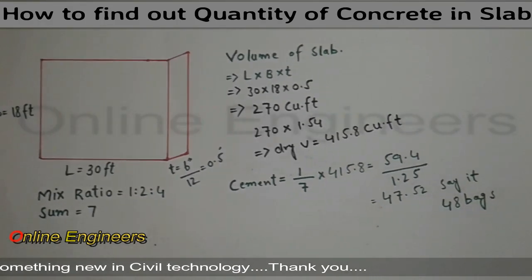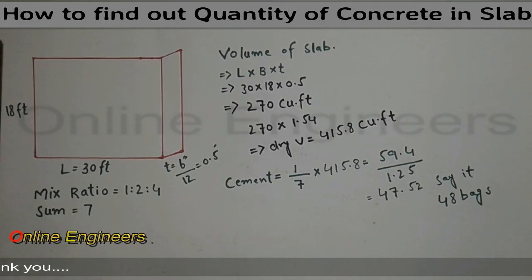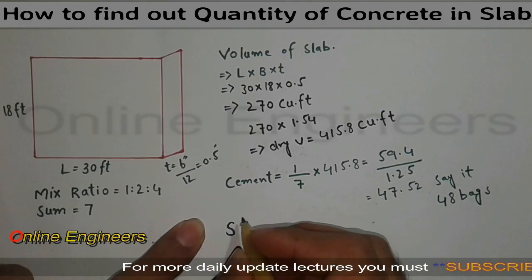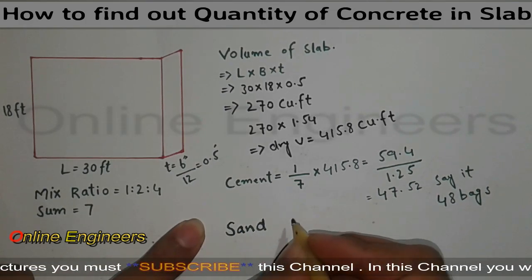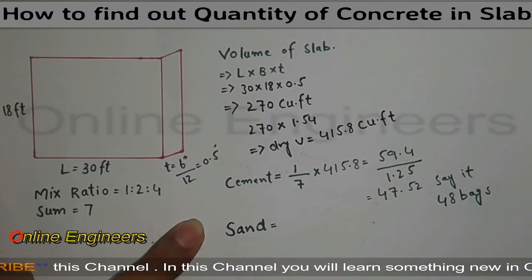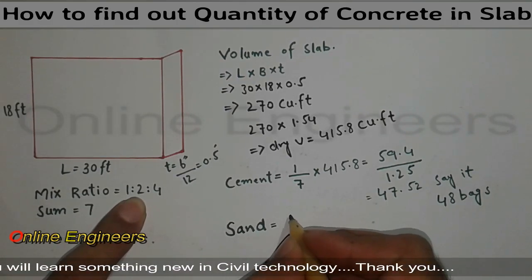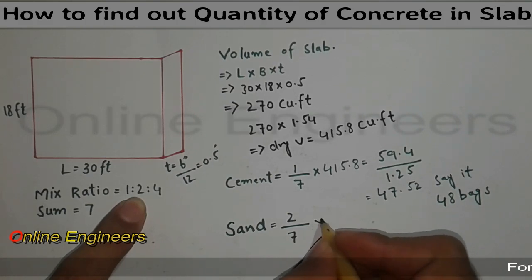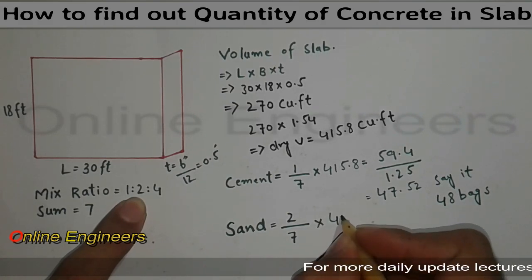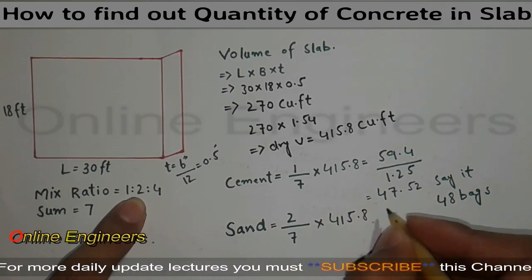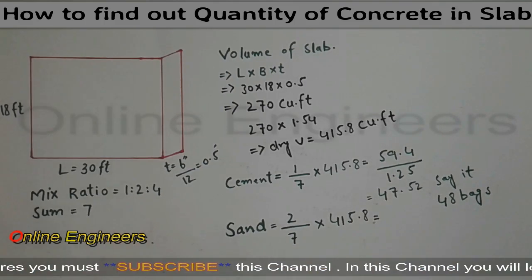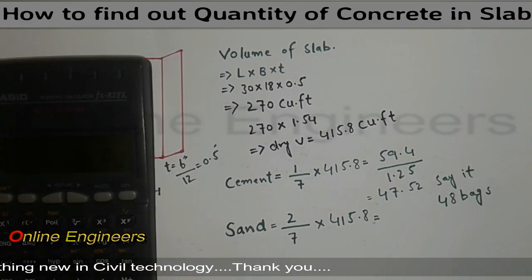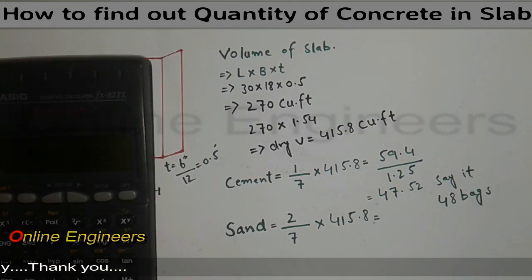Now I want to find out quantity of sand. We have ratio here is 2, also we have sum, and multiply by volume of the slab. 2 divided by 7, then multiply by 415.8. It will give you the answer.